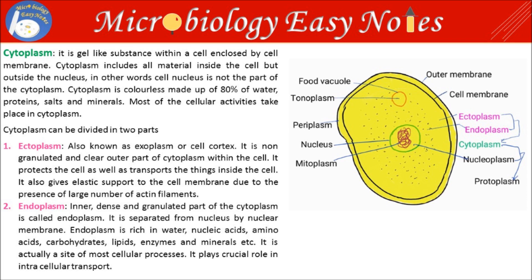Cytoplasm can be divided into two parts. First is Ectoplasm, also known as exoplasm or cell cortex. It is the non-granulated and clear outer part of the cytoplasm within the cell. It protects the cell as well as transports things inside the cell. It also gives elastic support to the cell membrane due to the presence of large numbers of actin filaments.